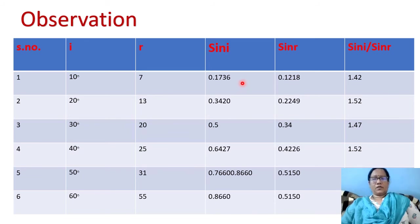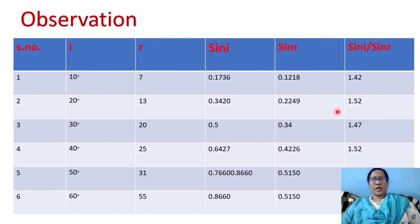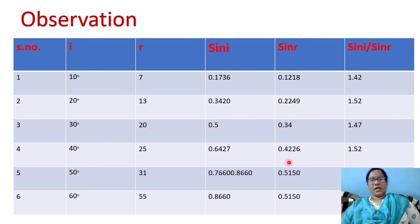When I equals 20 degrees and R equals 13 degrees: sin I = 0.3420, sin R = 0.2249, sin I by sin R = 1.520. When I equals 30 degrees, R equals 20 degrees: sin I = 0.5, sin R = 0.34, sin I by sin R = 1.47. When I equals 40 degrees, R equals 25 degrees: sin I = 0.6427, sin R = 0.4226, sin I by sin R = 1.52. The average refractive index of glass is 1.52.